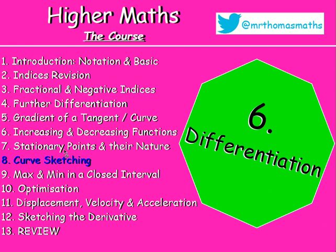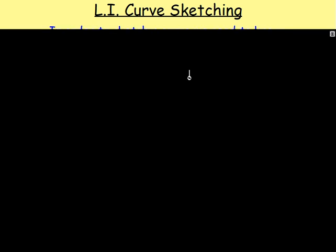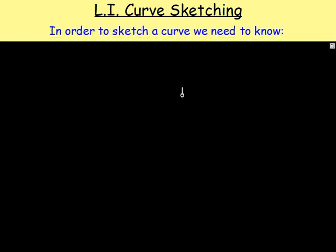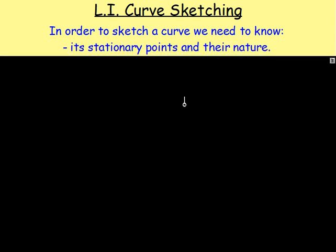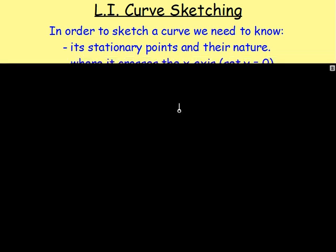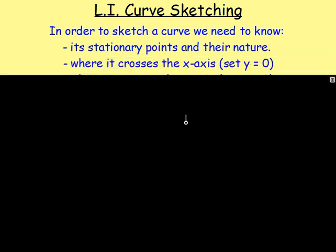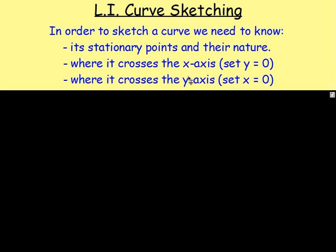If you remember last lesson we were looking at stationary points and their nature. We can now take that one step further and sketch a curve. To do that we need to know the stationary points and their nature. We also need to know where the graph would cross the x-axis and the y-axis. It will cross the x-axis when y is zero, giving coordinates of (something, 0), and the y-axis when x is zero, giving (0, something).